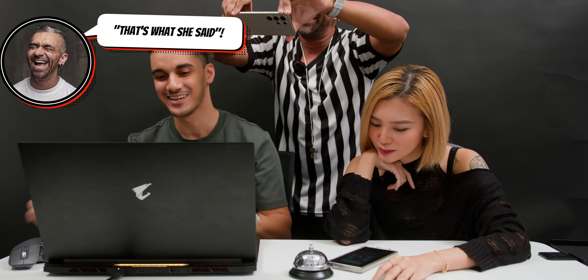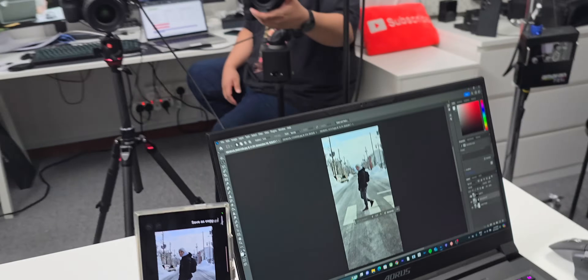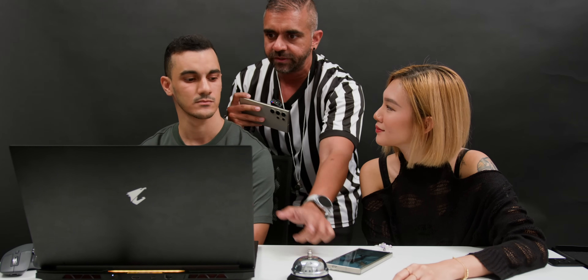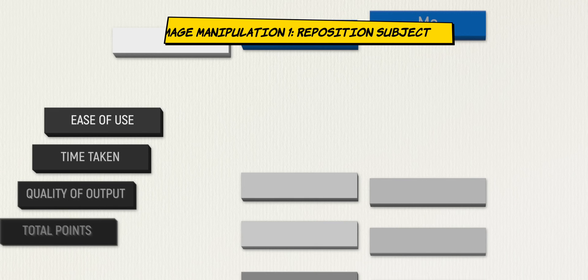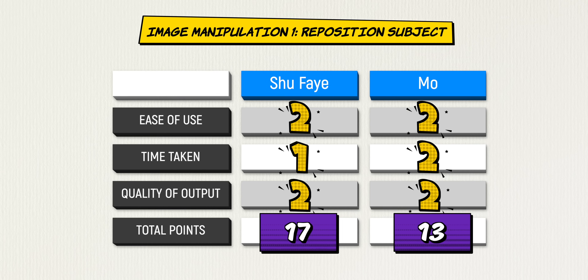Mo made the subject look huge in the frame. The host notes that both moved the image at the same time, but Galaxy AI took a little longer to process, possibly because Shufei both moved and resized the subject. Mo says that's technically an extra step — resizing — which is why it took longer, though the host calls it an excuse.